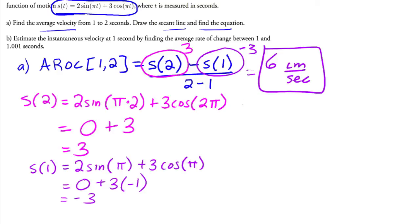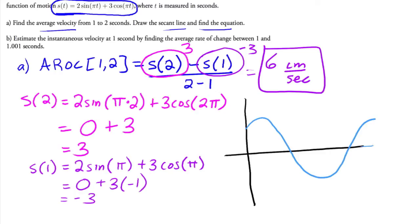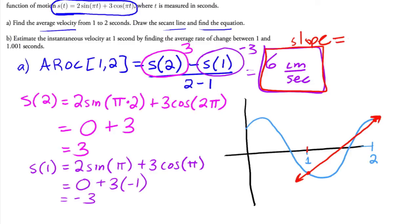To draw the graph, you can plug this into your graphing calculator and you'll get something that looks roughly like a wave. Marking 1 and 2 on the time axis, the secant line connecting those two points has a slope of 6, which is what we just calculated as the average velocity between t = 1 and t = 2.